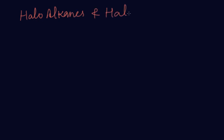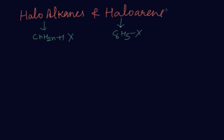Hello students, today I am going to explain the first chapter of class 12 — Haloalkanes and Haloarenes. First, we will do its introduction and some general things. The general formula of Haloalkanes is CₙH₂ₙ₊₁X, and the general formula of Haloarenes is C₆H₅X.